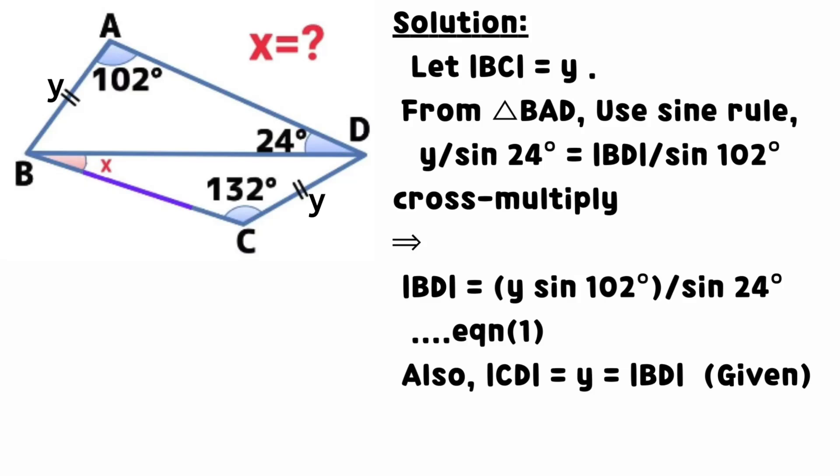Cross multiply and we have that BD equals y multiply sine 102 degrees divided by sine 24 degrees. We call it equation 1.